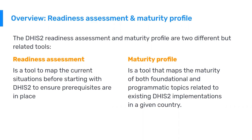The readiness assessment is a tool to map the current situation in a country before starting with DHIS2, to ensure that the prerequisites are in place. The maturity profile, on the other hand, is a tool that maps the maturity of both the foundational and programmatic topics related to an existing DHIS2 implementation in a given country. So a readiness assessment is something you do before you start using DHIS2, while the maturity profile is used to understand how you are doing in your already running DHIS2 implementation.